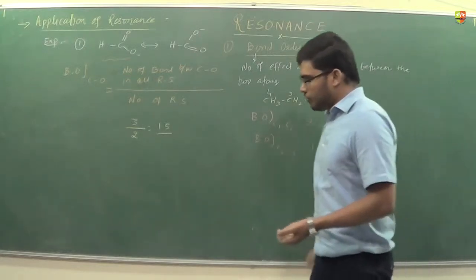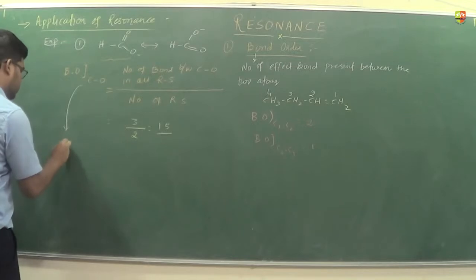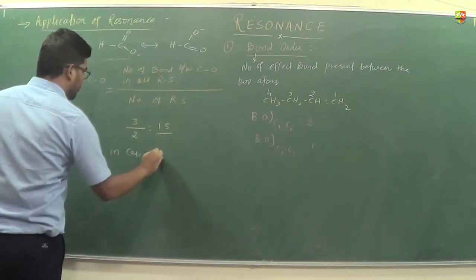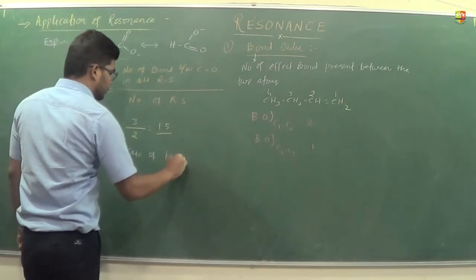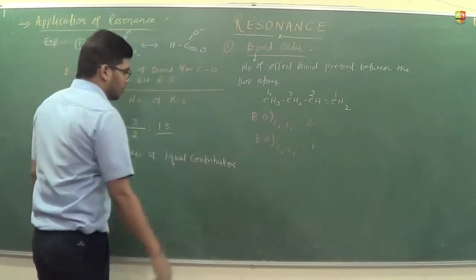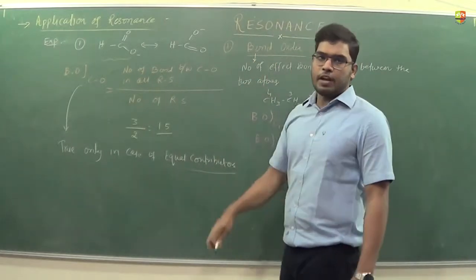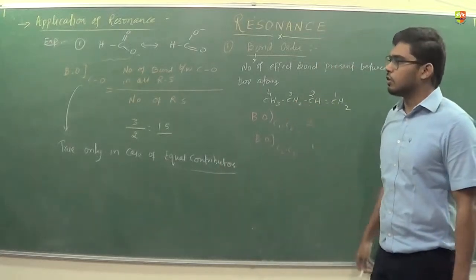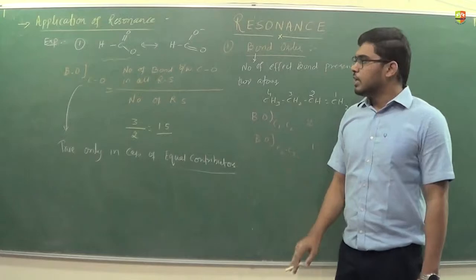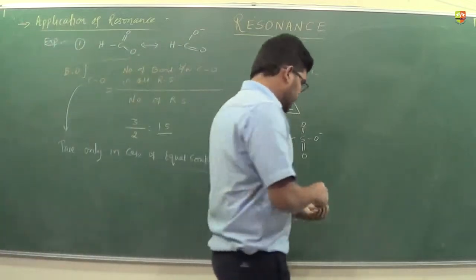This formula is true only in the case of equal contributors. For unequal contributors, we will see a different approach later. The formula is: number of bonds between the given two atoms in all RS, divided by the total number of RS possible.